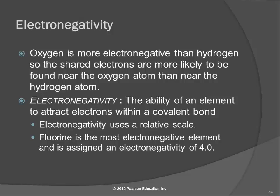Electronegativity is just a relative scale - there's no absolute measurement. You can only compare two elements. They arbitrarily set the scale from zero to four, saying the most electronegative element, fluorine, has an electronegativity of 4.0, kind of like a grading scale, and it goes down from there.